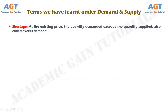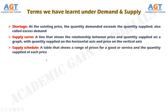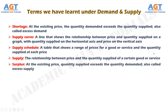Shortage is a situation in which, at the existing price, the quantity demanded exceeds the quantity supplied; also called excess demand. The supply curve is a line that shows the relationship between price and quantity supplied on a graph, with quantity supplied on the horizontal axis and price on the vertical axis. The supply schedule is a table that shows a range of prices for a good or service and the quantity supplied at each price. Supply is the relationship between price and the quantity supplied of a certain good or service. And finally, surplus is a situation in which, at the existing price, quantity supplied exceeds the quantity demanded; it is also called excess supply.